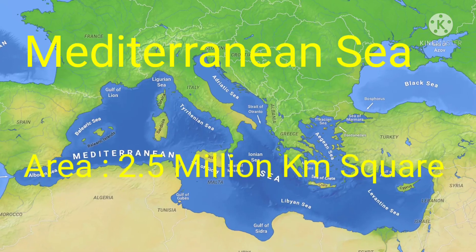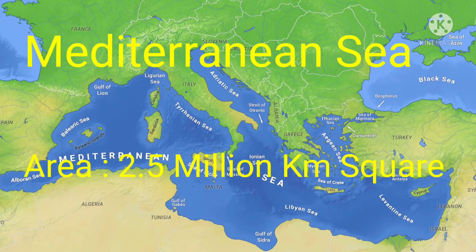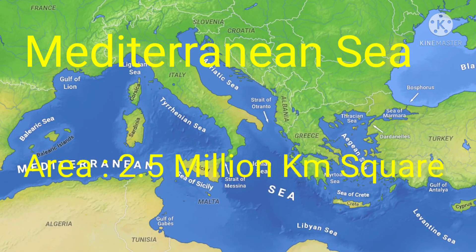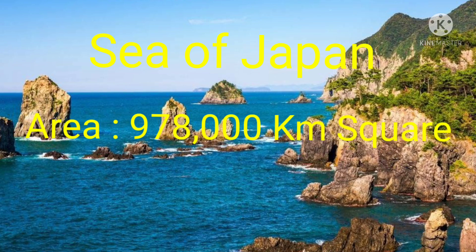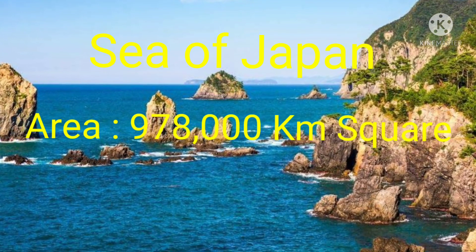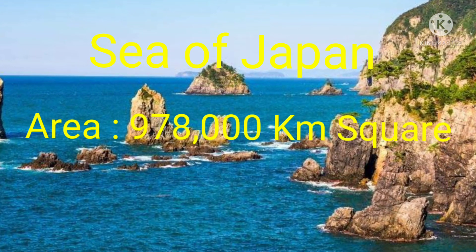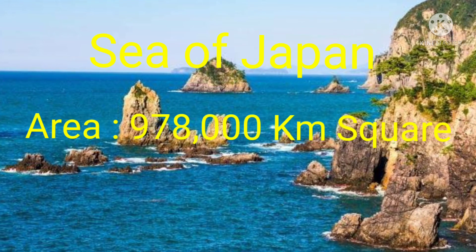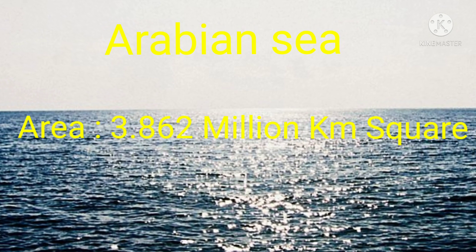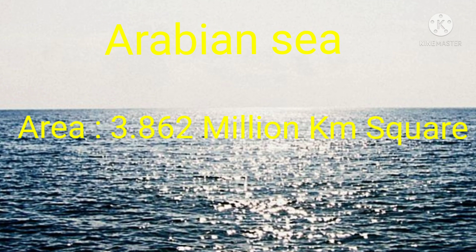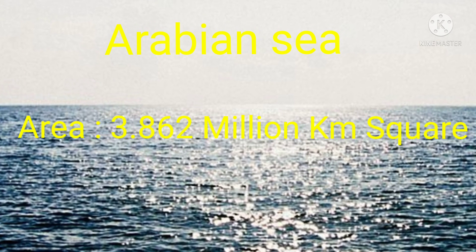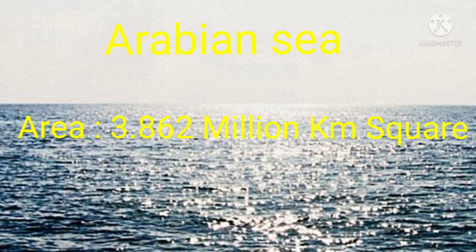Mediterranean Sea — the area of the Mediterranean Sea is 2.5 million km². Sea of Japan — the area of the Sea of Japan is 978,000 km². Arabian Sea — the area of the Arabian Sea is 3.862 million km².